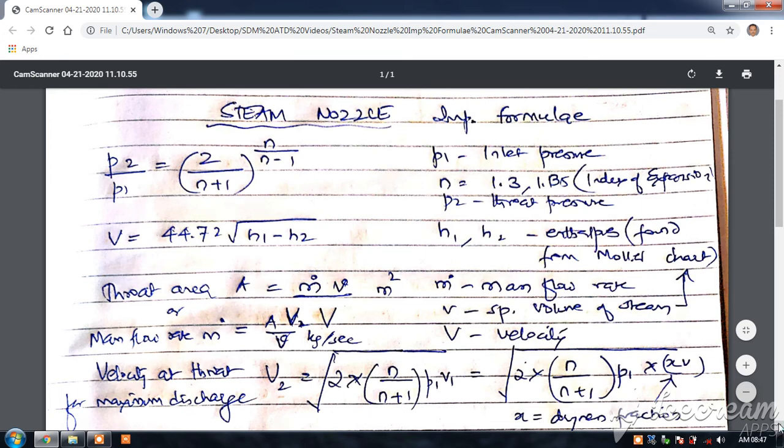Students, we will look at the important formulas used in steam nozzle numericals. We start with the under equation: P2 by P1 is equal to 2 by 2 divided by n plus 1, whole raised to n by n minus 1.